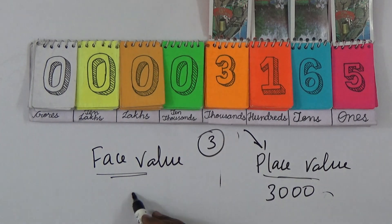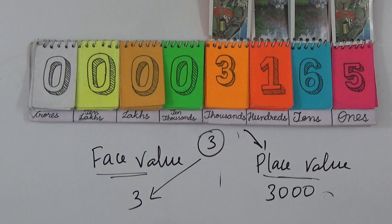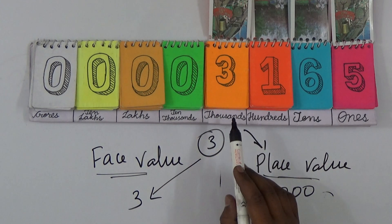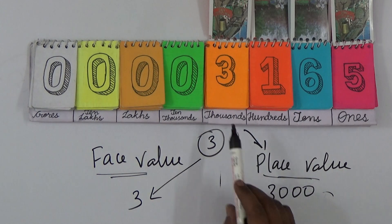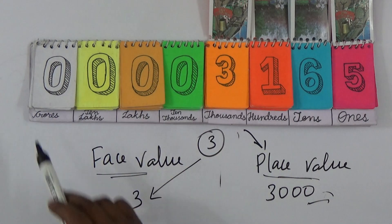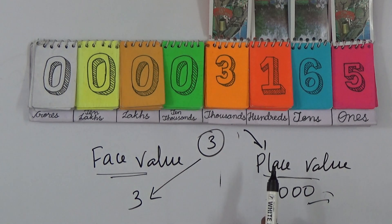And face value is the number 3 itself. Number 3 itself is the face value, so the digit number value itself is the face value. And that place name is thousands, so that's why 3000 is the place value. Using this model, not only for face value and place values, but to understand reading numbers.